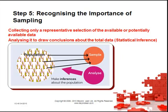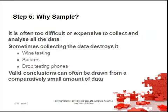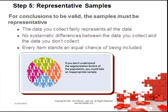Collecting only a representative selection of the available data and analysing it to draw conclusions about the total data is what we call a sample. We sample because it's often too difficult or expensive to collect all the data, and sometimes collecting the data destroys it — as in wine tasting, sutures or drug testing. Valid conclusions can often be drawn from a comparatively small amount of data. For conclusions to be valid, the samples must be representative — no systematic differences between the data you collect and the data you don't, and every item stands an equal chance of being included.